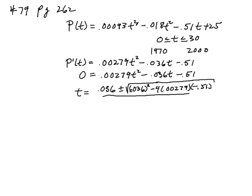And then that whole thing divided by 2 times a. Make sure you divide the whole plus or minus .036 and, or I'm sorry, the .036 plus or minus the radical, that whole thing divided by 2 times .00279.